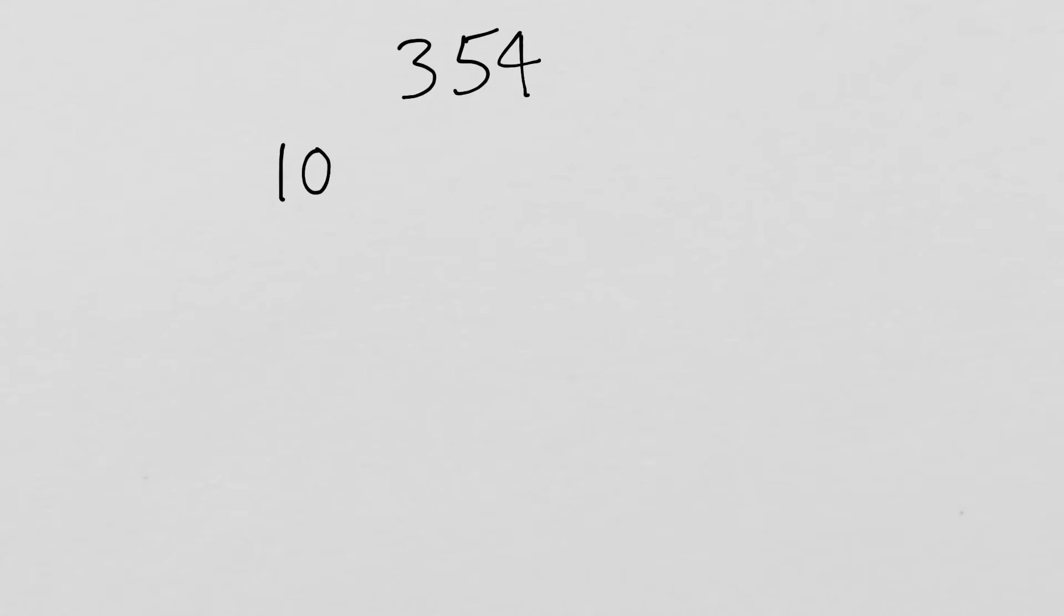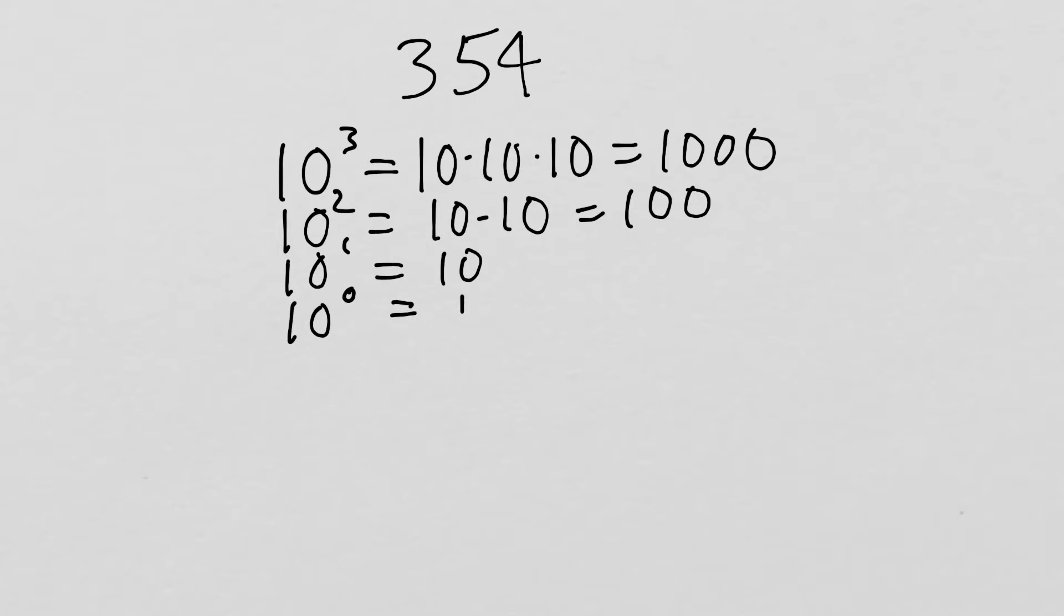If we have 10 to the third, that's 10 times 10 times 10, which is 1,000. You can see I've taken 10 three times there. 10 to the second is 10 times 10 equals 100, and 10 to the first is just 10 taken once, which is 10, and 10 to the zeroth is 1.